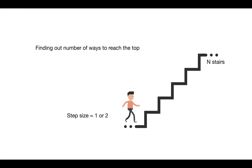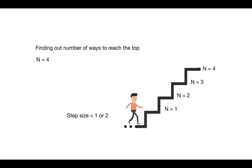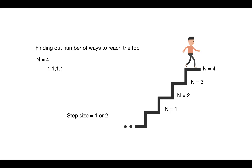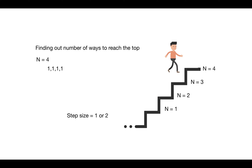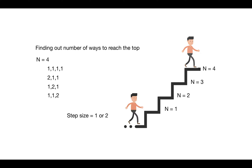There are multiple ways to reach the top, since you can take either one or two steps at each stair. For instance, if there are four stairs you can reach the top by: one-one-one-one, or two-one-one, or one-two-one, or one-one-two, or two-two. So there are a total of five ways to reach the top.